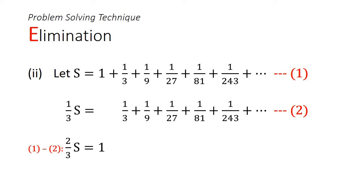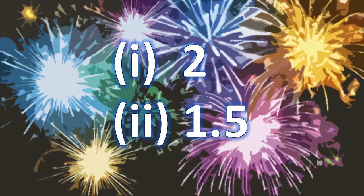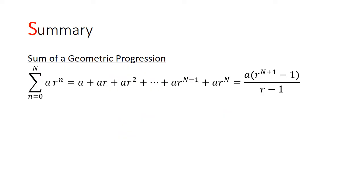the left hand side will be left with 2 thirds s. On the right hand side, almost every term is obliterated except for the number 1. Hence, we can make s the subject. s is equal to 3 over 2 or 1.5. So in summary, in part 1, the answer is 2 and in part 2, the answer is 1.5. Did you get the answer?